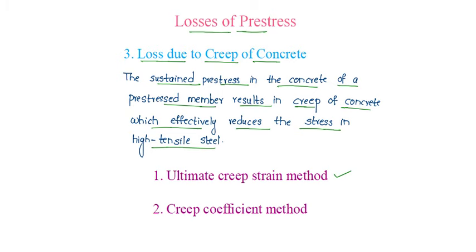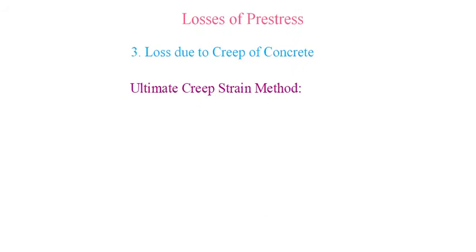One is the ultimate creep strain method. The second is the creep coefficient method. First is the ultimate creep strain method, in which loss of pre-stress in steel due to creep of concrete...